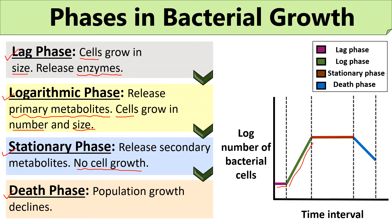The death phase is the decline growth phase of bacteria in which the number of dead cells increases because of nutrient scarcity in the medium and the accumulation of toxic waste that were released during the stationary phase.